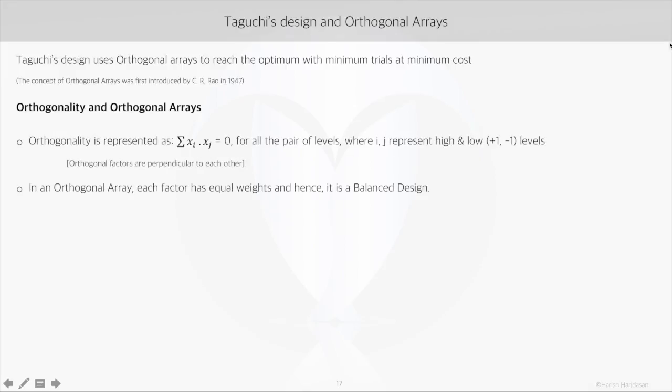Now looking at some basic definitions starting with orthogonality. Let's say we have x and y as two vectors. Then we would call these two vectors x and y orthogonal if the sum of their dot products equals 0. That is x1 into y1 plus x2 into y2 up to xn into yn. The sum of all these terms equals 0, then we would call the vectors x and y as orthogonal. And if these two vectors are orthogonal, they would be mutually perpendicular as well.